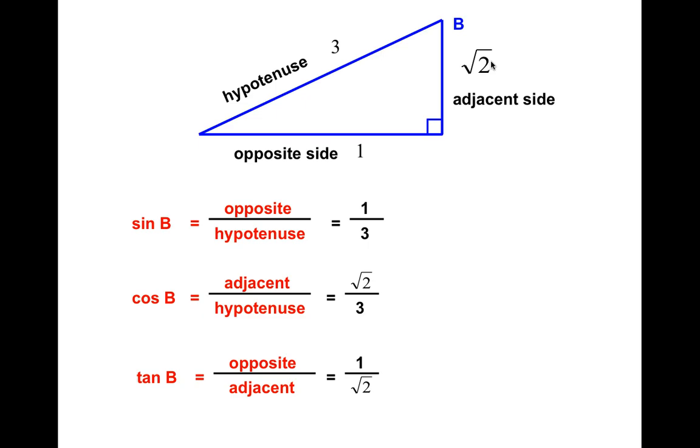But usually, you're expected to rationalize your denominator. So what we can do right here is multiply both the numerator and denominator by the square root of 2. And it becomes the square root of 2 over 2.